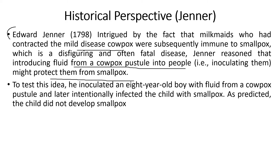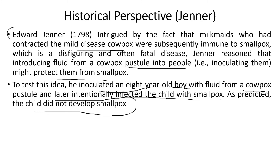The two diseases were different altogether, but Jenner used this phenomenon and was successful to some extent. He inoculated an eight-year-old boy with fluid from a cowpox pustule and later intentionally infected the child with smallpox. As predicted, the child did not develop smallpox, confirming his theory.